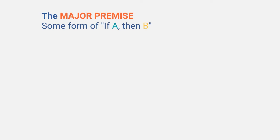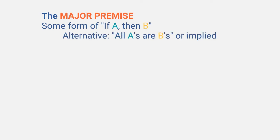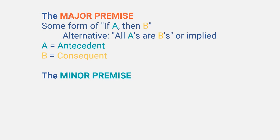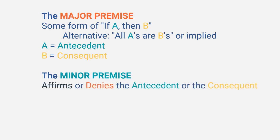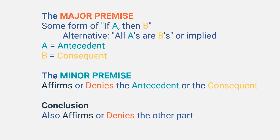To briefly summarize: a major premise at its core is an if-A-then-B statement. In practice it can also look like 'all As are Bs' or it can be implied, but it always comes down to an if-then relationship. You call the A the antecedent and the B the consequent. After that you go to the minor premise, which either affirms or denies the antecedent or the consequent, and the conclusion will then also affirm or deny the other part of the major premise.